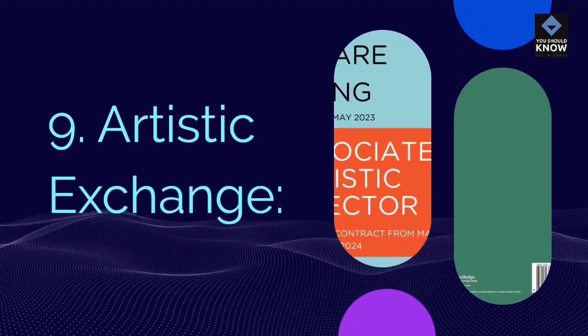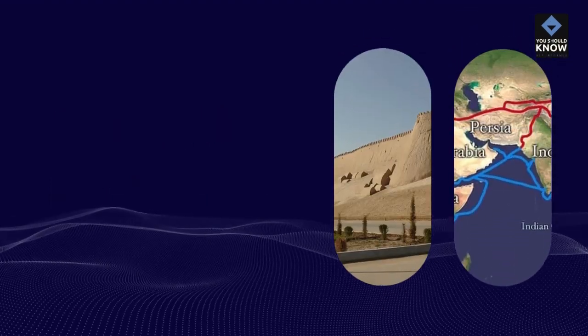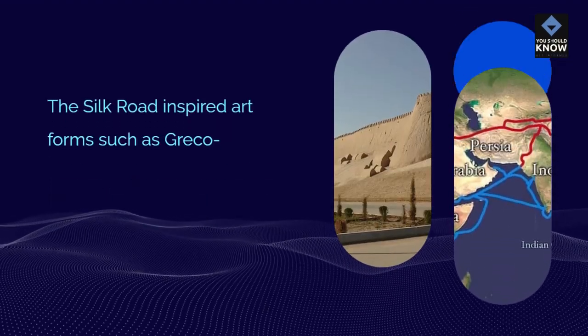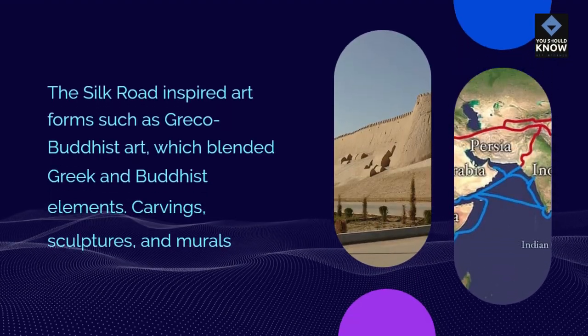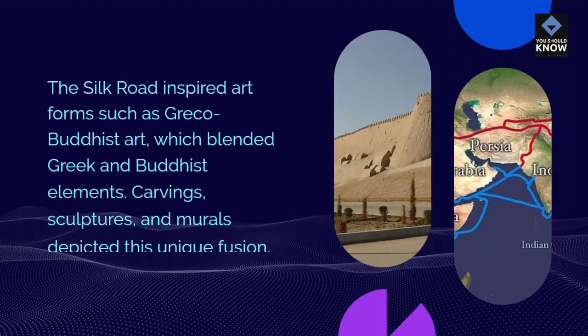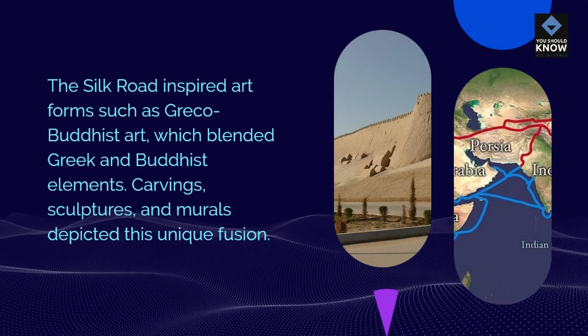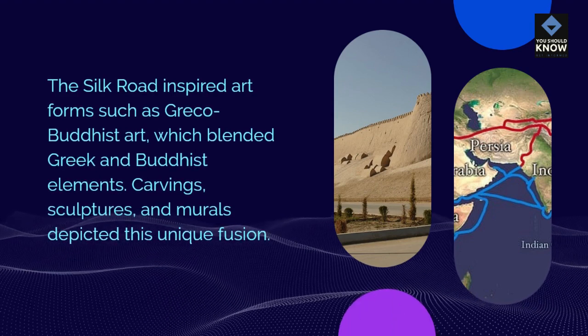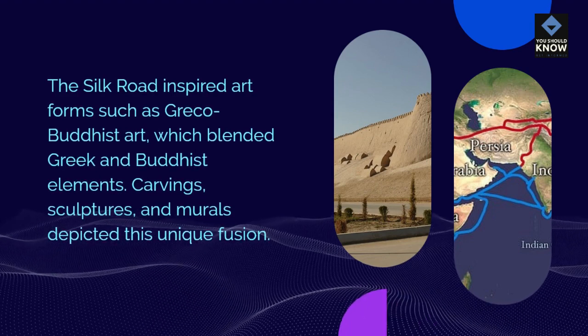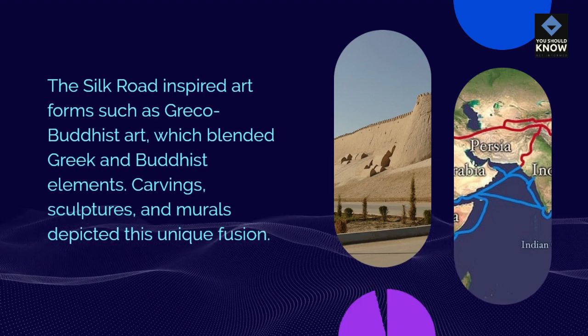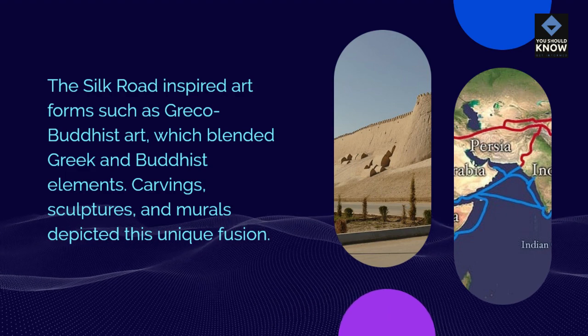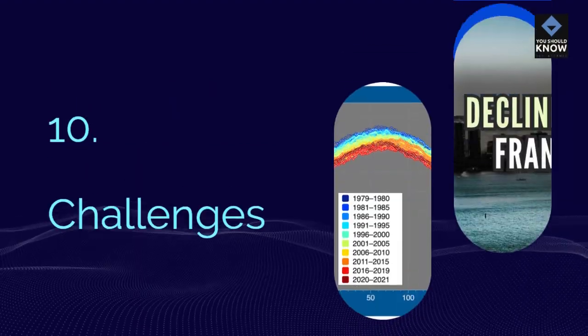Artistic Exchange: The Silk Road inspired art forms such as Greco-Buddhist art, which blended Greek and Buddhist elements. Carvings, sculptures, and murals depicted this unique fusion.